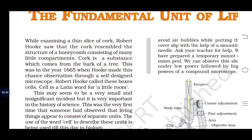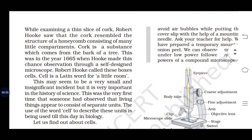Through a self-designed microscope, Hooke was able to see small things in a large way. Robert Hooke called these boxes 'cells.' The word 'cell' is a Latin word which means a little room.